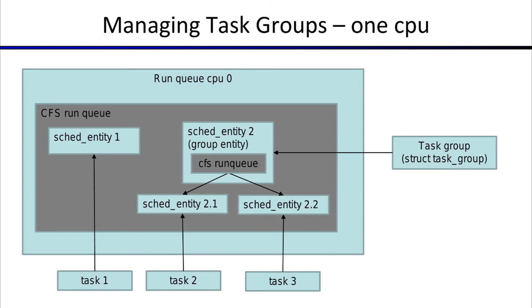At the top level, the CFS run queue decides between sched entity 1 and sched entity 2. If sched entity 2 needs to run, it defers to sched entity 2's CFS run queue to decide which task actually gets picked. Task groups connect these tasks together through this structure.